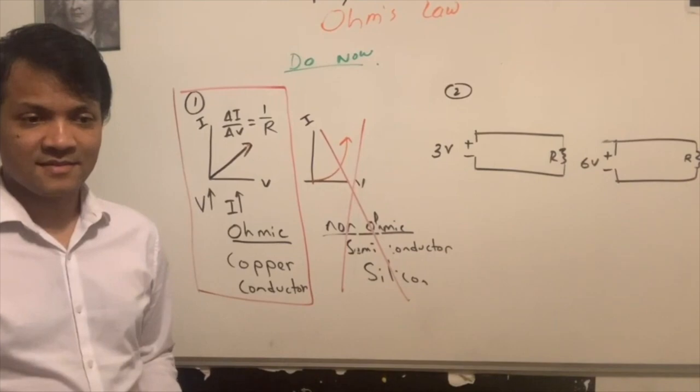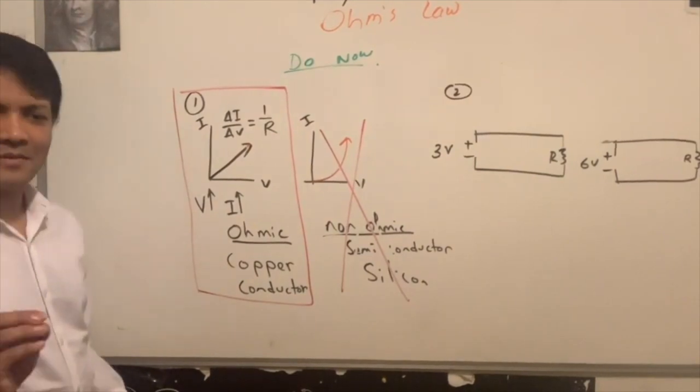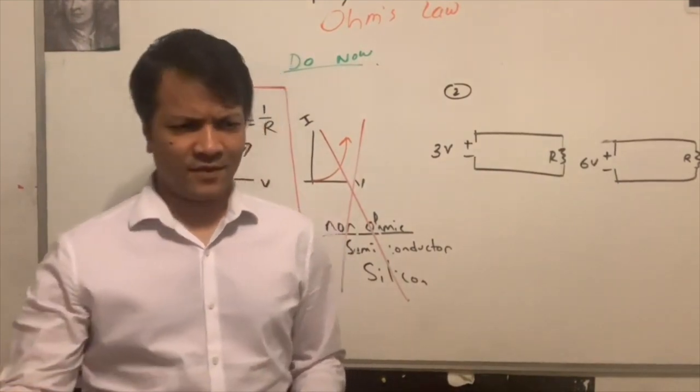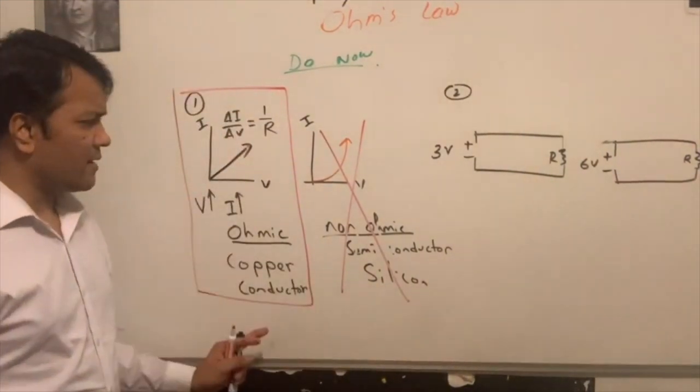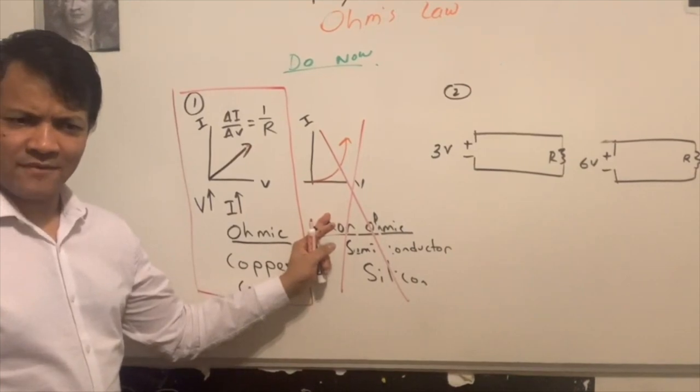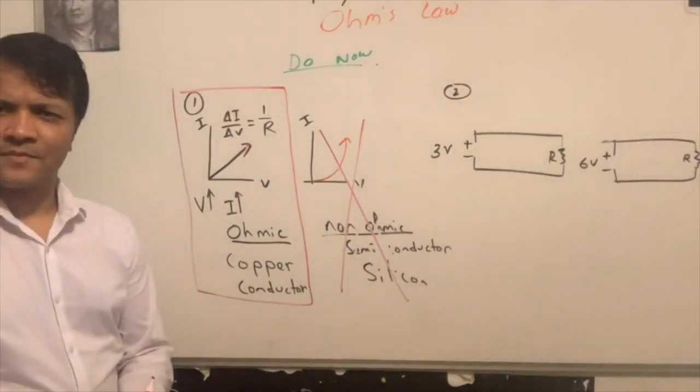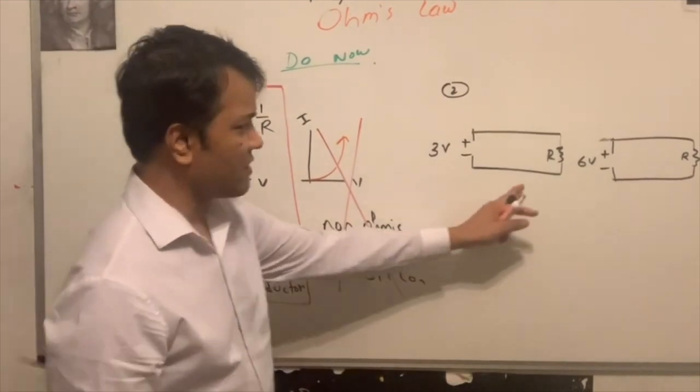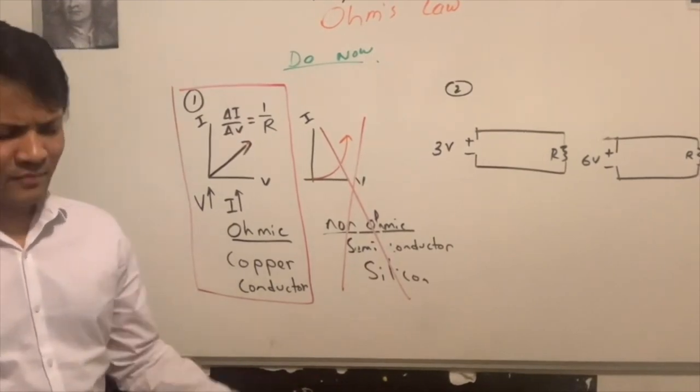But when do we call something law? When it's always true. When it's true for everything. For example, Newton's first law, second law, third law. But this law seems like it fails for things that are made of semiconductor. What do we do? We should call it Ohm's theory. Is germanium also non-ohmic? Yes. Anything that's non-metal is non-ohmic. We're going to keep calling it Ohm's law. We are used to it.